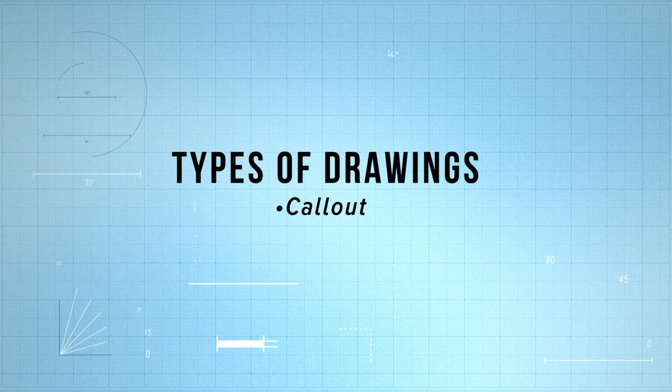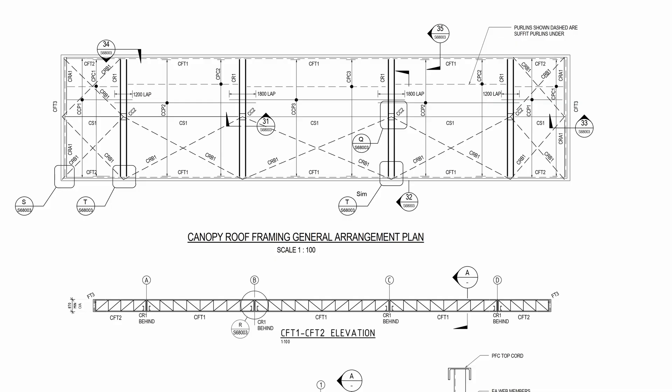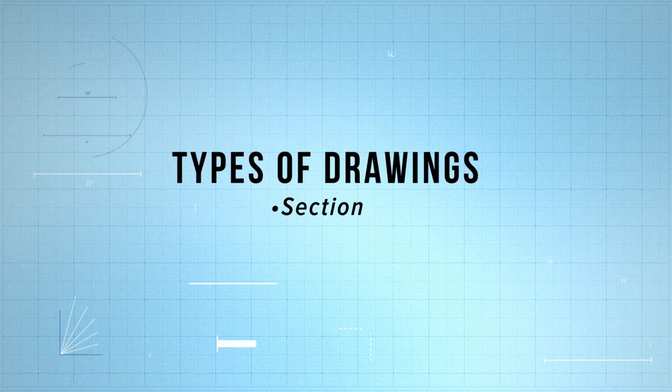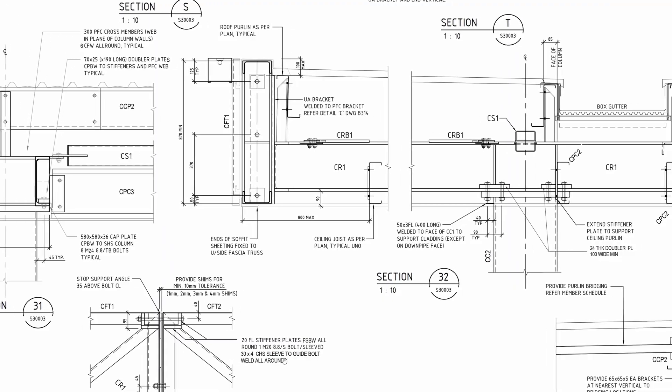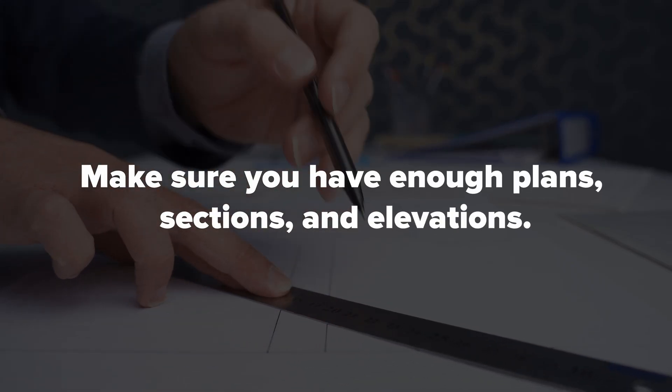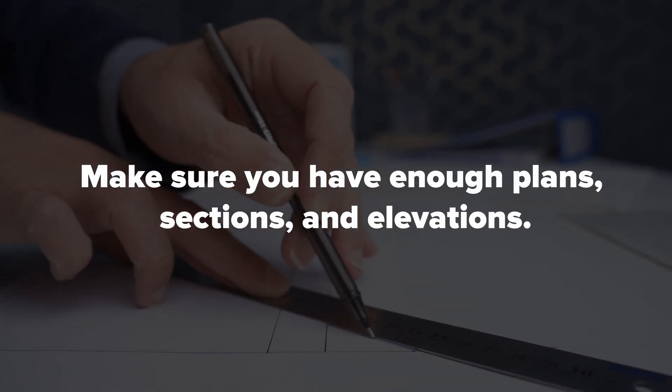Beyond general arrangement drawings, you might have call-outs on drawings — a little box around a certain area with a blown-up detail off to the side, used where there's a lot of detail to show. In addition to call-outs, you can have section cuts through a specific part of the building that needs more detail to show your design intent. You need to make sure you have enough drawings across plans, sections, and elevations.